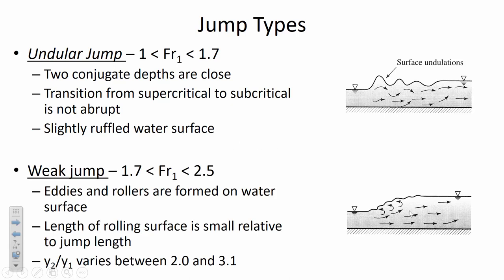A weak jump, where the Froude number is roughly 1.7 to 2.5, starts to get more interesting. The ratio of upstream to downstream depth becomes notable — you can visually tell there's a hydraulic jump if the downstream depth is double the upstream depth. Anything less than that may not be immediately clear whether a hydraulic jump is happening or if it's just random variation, but in a weak jump it becomes more apparent.